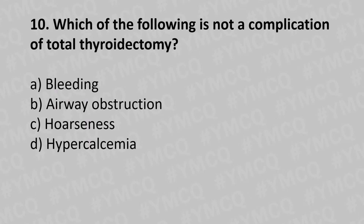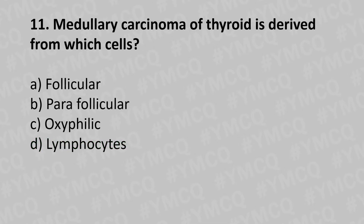Which of the following is not a complication of total thyroidectomy? Option A - bleeding, option B - airway obstruction, option C - Horner's syndrome, option D - hyperkalemia. The answer is option D - hyperkalemia.